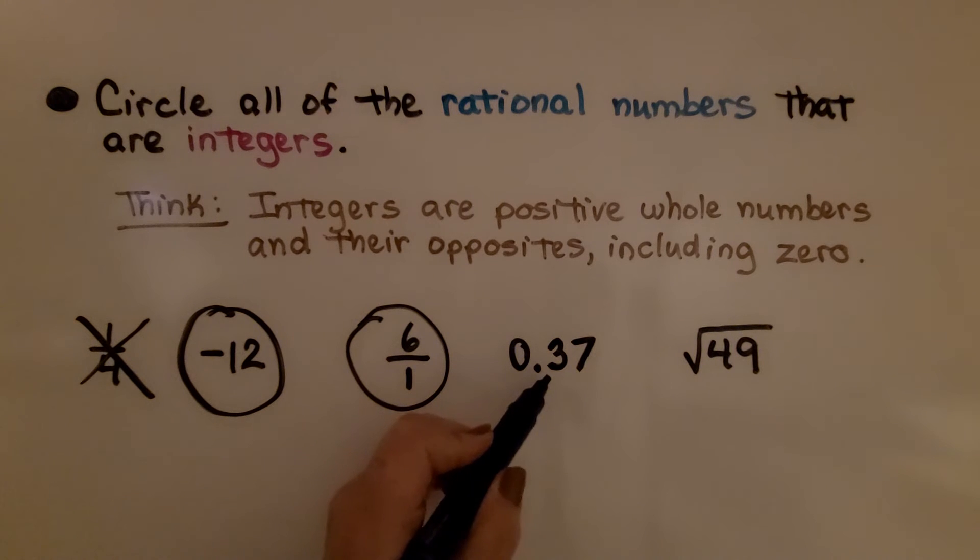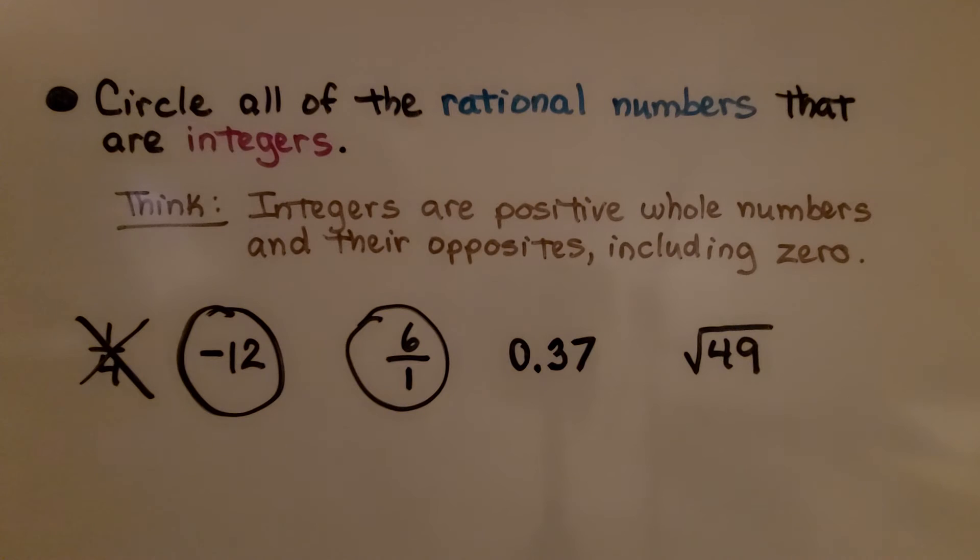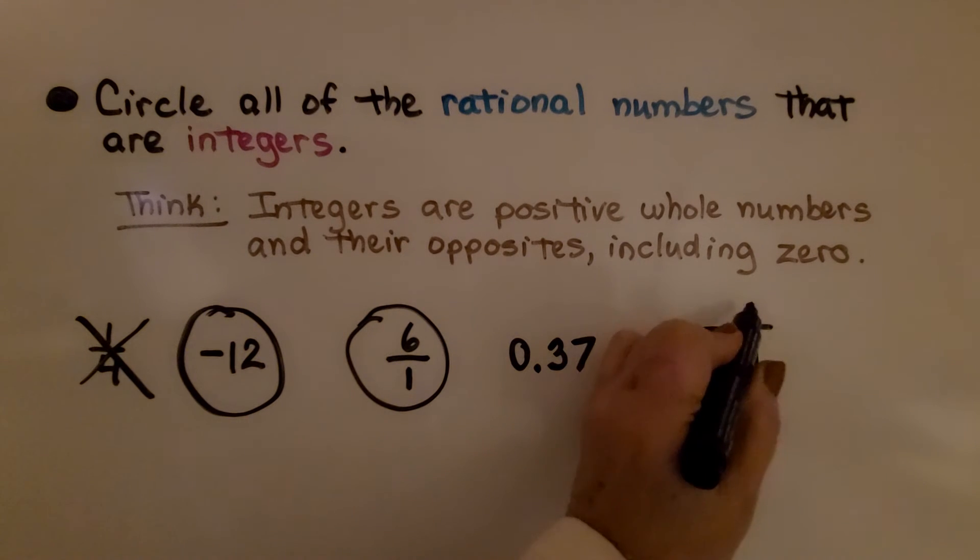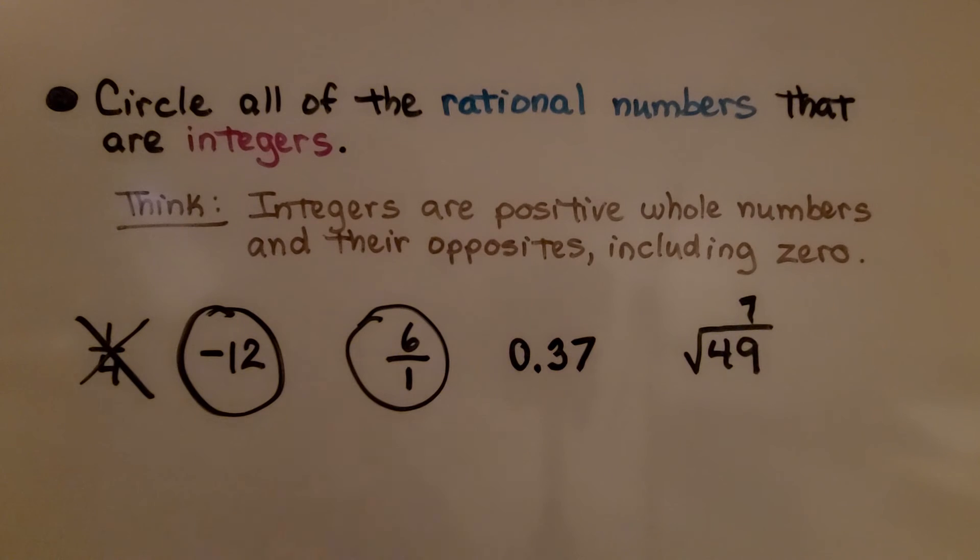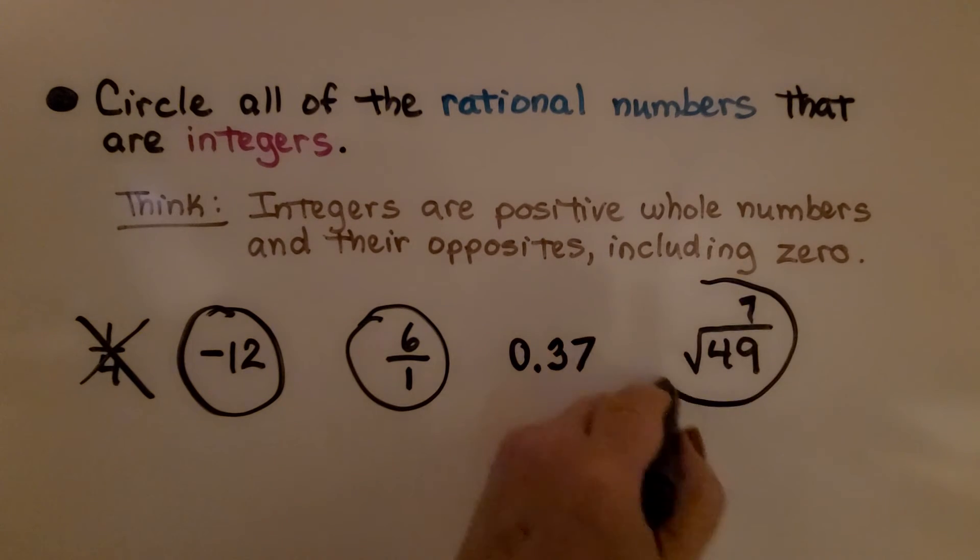Here we have 37 hundredths. That's not a whole number, so that's not going to be circled. Here we have the square root of 49. Well, the square root of 49 is 7. That is a whole number. It's a positive whole number. So yeah, we can circle that one too.